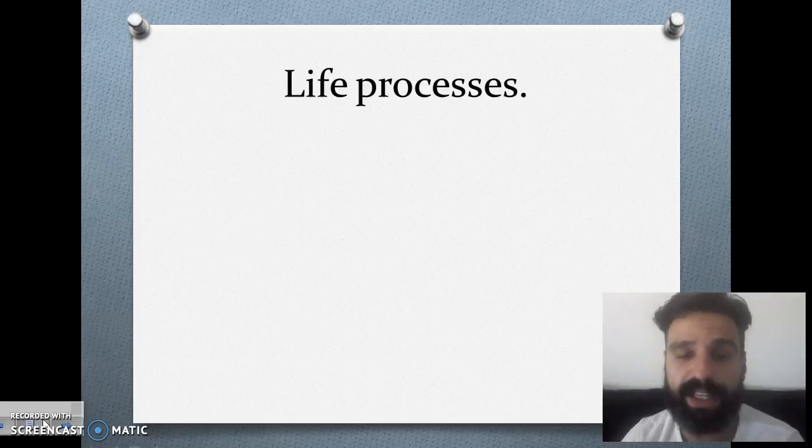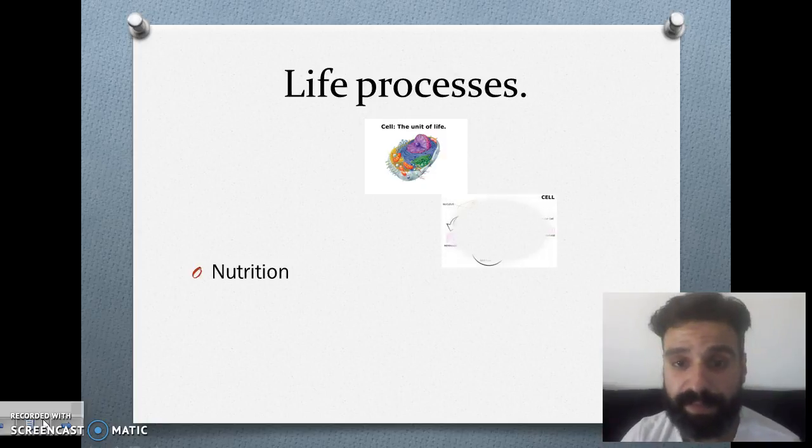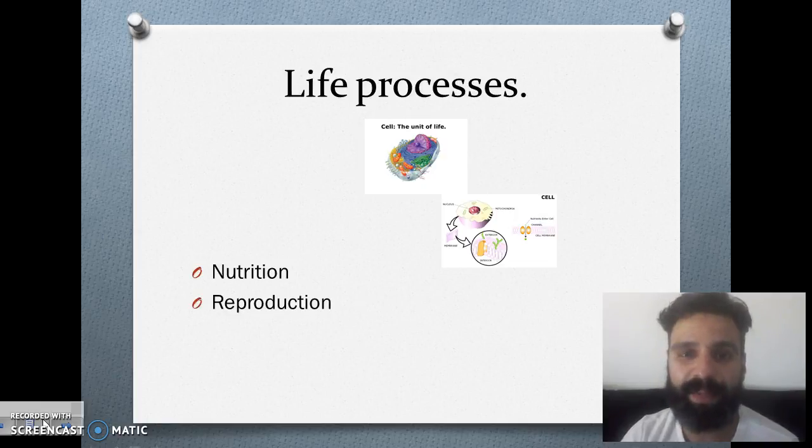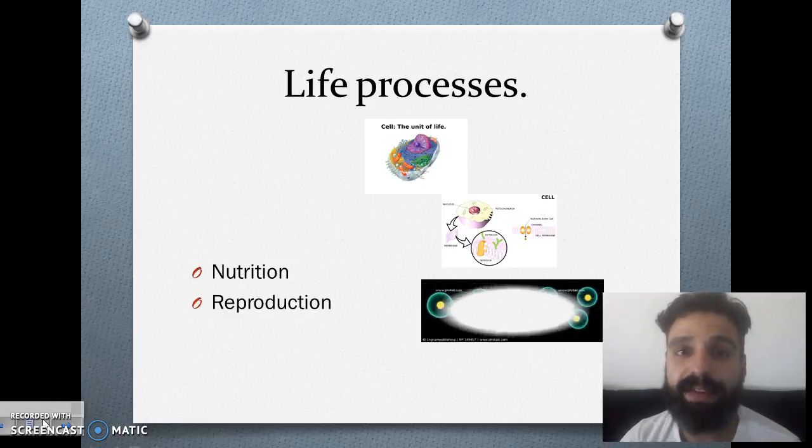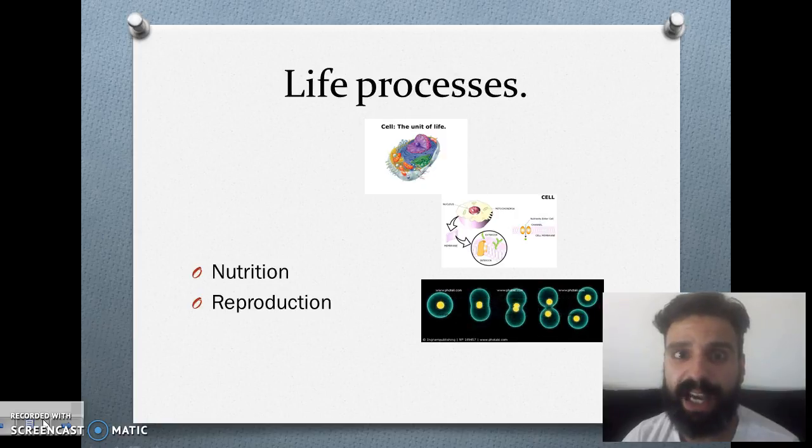Let's go with the first one, life processes. You must know that cells are the basic unit of life and they have got three different functions. The first one, nutrition, they obtain energy and nutrients from food. The second one, reproduction, they can divide and obtain new cells and they are all the same, they are all identical.